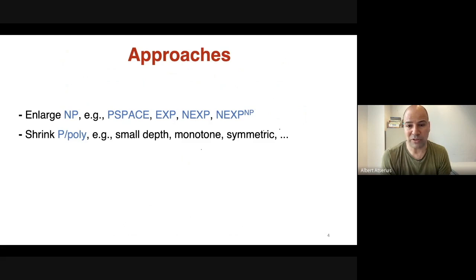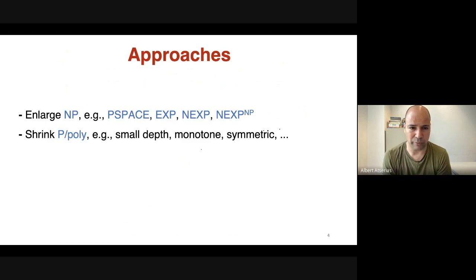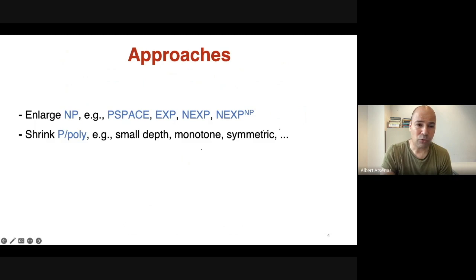This last class at the end of the line — NEXP — can be shown to have problems that are not solvable by polynomial size circuits, but for the other examples this is not known. So people have tried to attack the problem by enlarging the class and getting lower bounds.